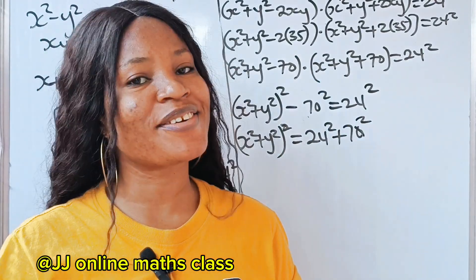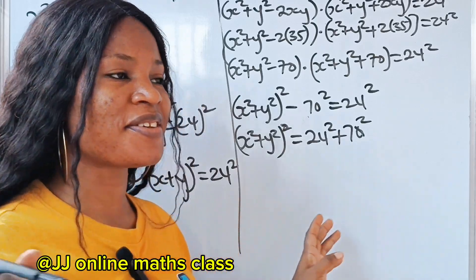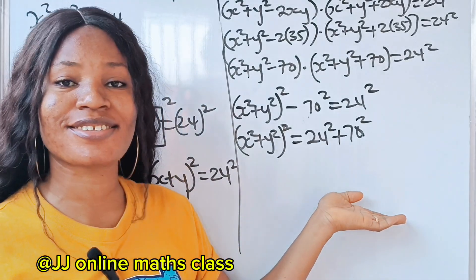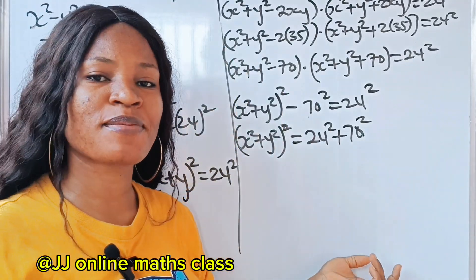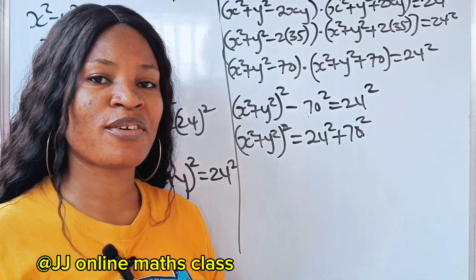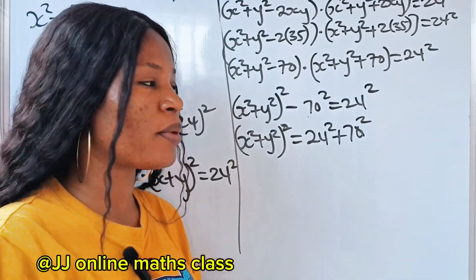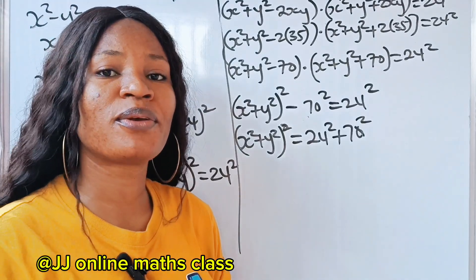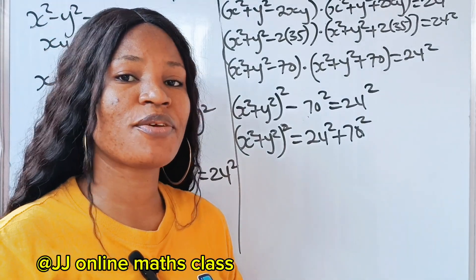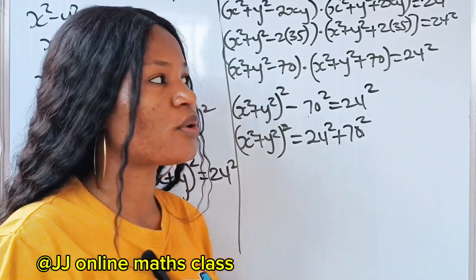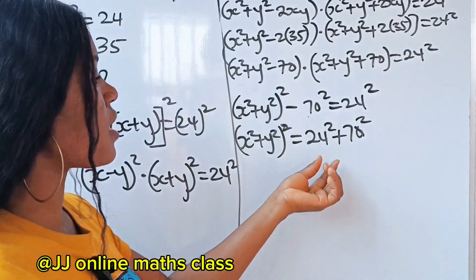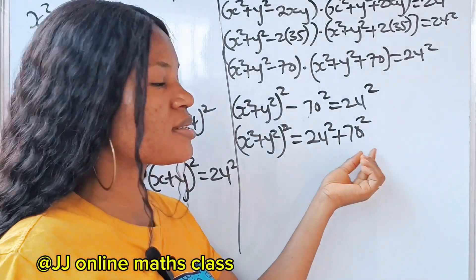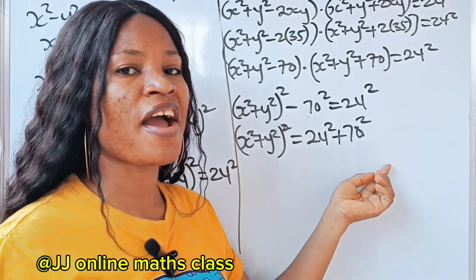So we rearrange to get x squared plus y squared, all raised to the power of 2, equals 24 squared plus 70 squared. This is very interesting! Now it's time to work out 24 squared and 70 squared — and you are not allowed to use your calculator!